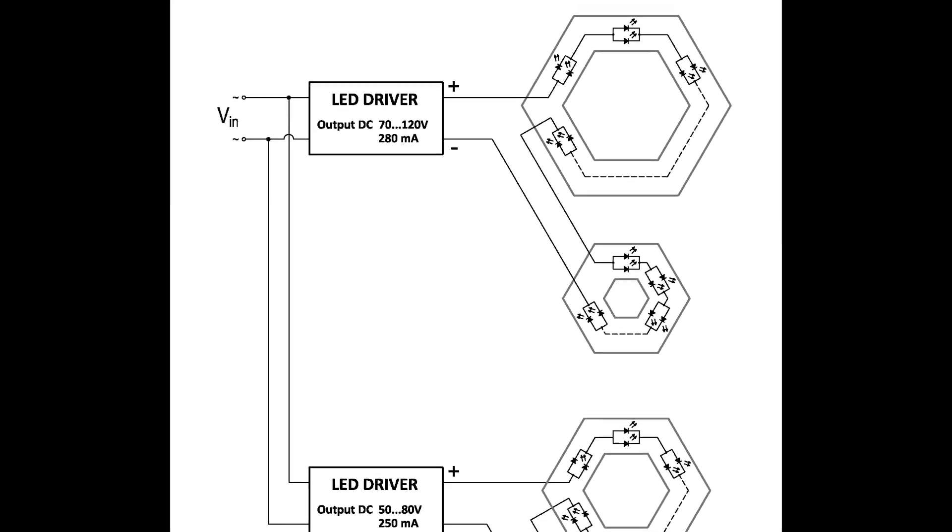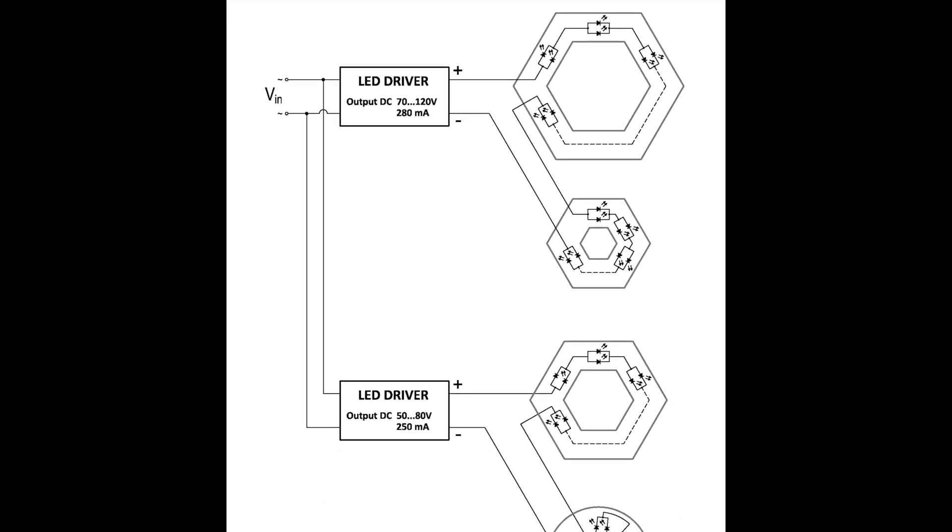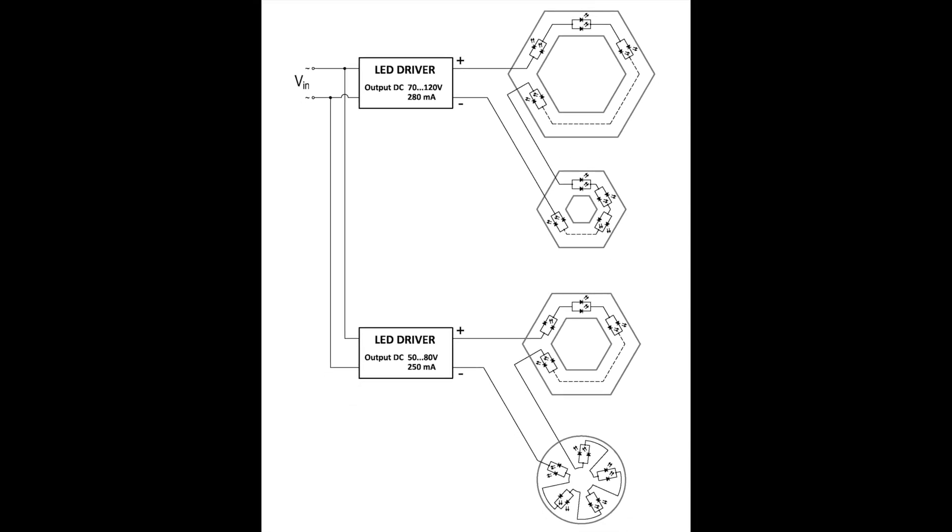This chandelier has two virtually independent circuits. One circuit for large and small sections. The second circuit is for the middle section and the LED ring. We'll continue to work with this diagram.